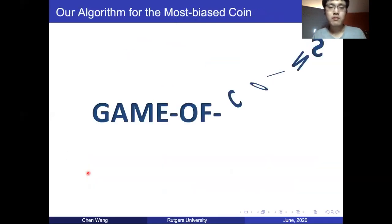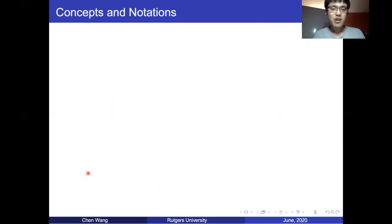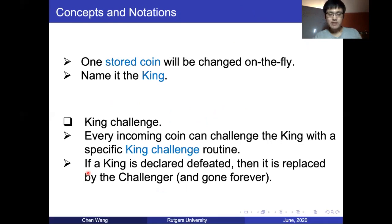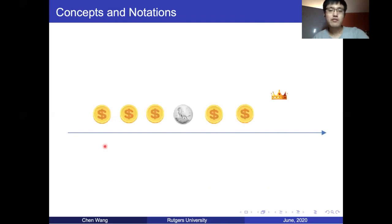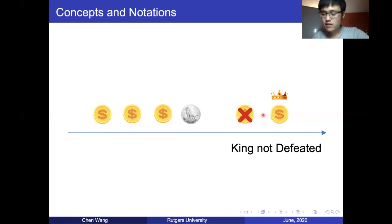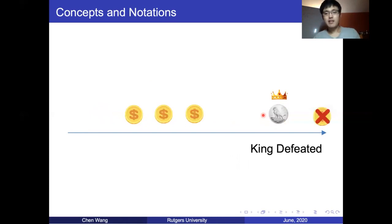Now we introduce our main algorithm, which we name Game of Coins. Since we are only storing one coin at a time, we name the stored coin the king. For each arriving coin, if there already exists a king, it will trigger a king challenge. By the end, either the king or the challenger is declared defeated and discarded. For example, all coins want to get to the throne. This is the Lion King coin — let's say this is Simba — and we always want Simba to get to the throne and defend it.